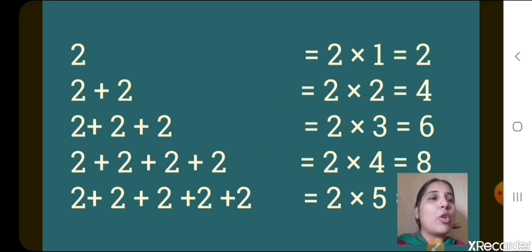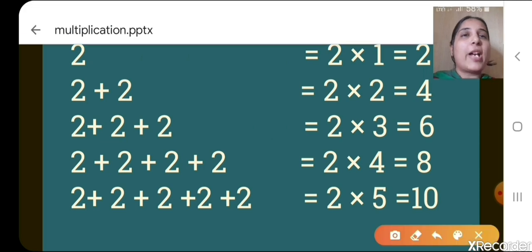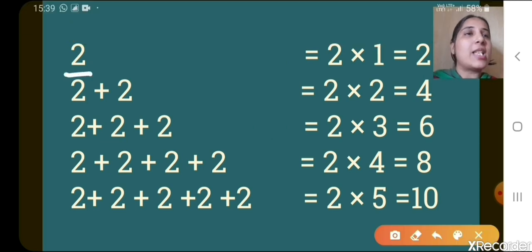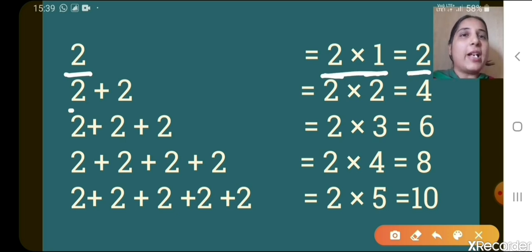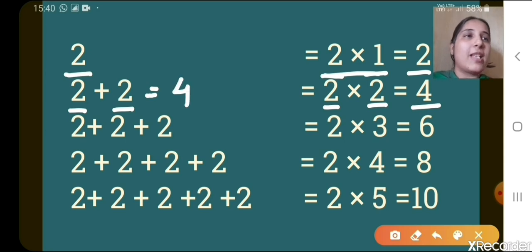Now you can see one more example here, as we write the table of 2. You can see how many times 2 appears here — 1 time, so 2 one time gives 2. Now here you can see 2 added 2 times — so 2 twos are 4. When you add 2 plus 2, then also you get 4 only, isn't it?